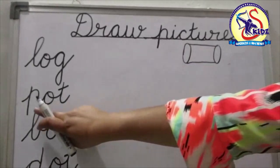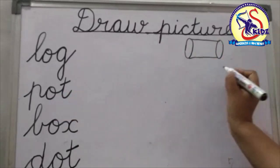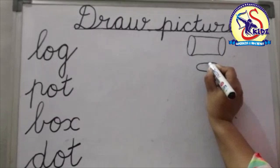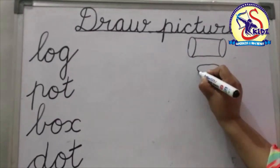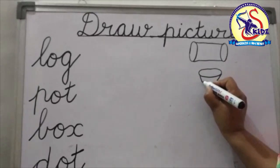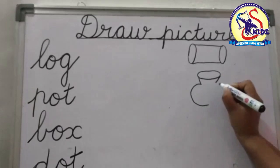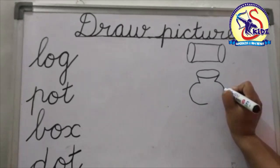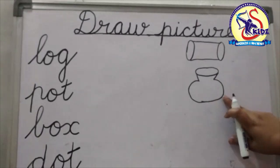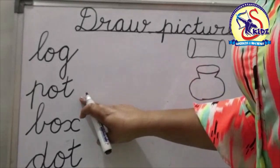Now see the next word: P-O-T, pot. Now we will make an oval. We will make small slanting lines, then a curve, again a curve from another side, and we will join it. This is a pot. P-O-T, pot.